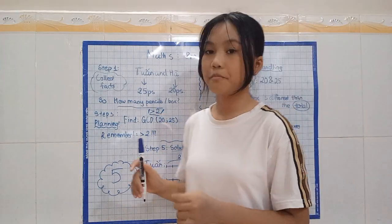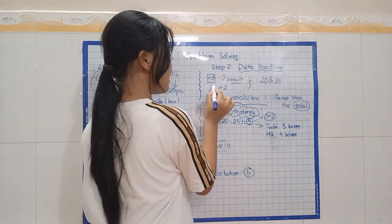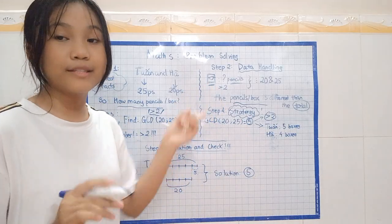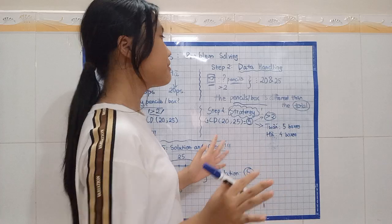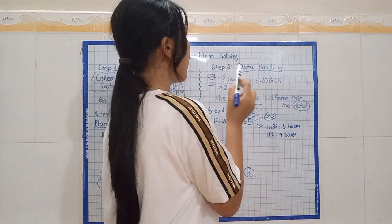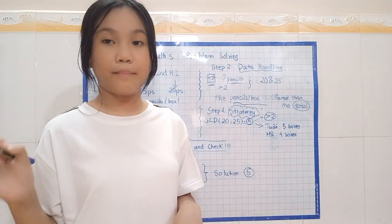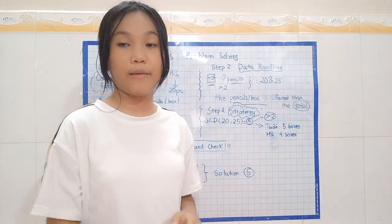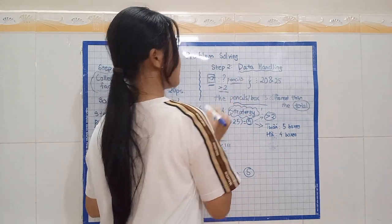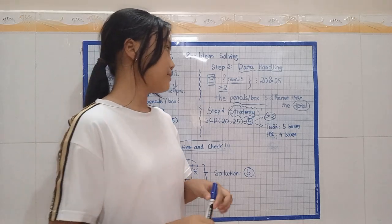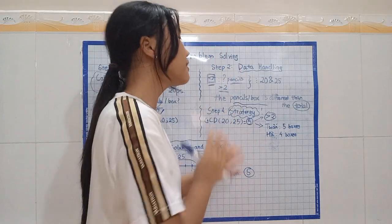We already got the hint of the problem. We've already got the facts. Now, let's come to our facts of data handling. Here, imagine, this is a pencil box. I'm drawing it like this, so it will be quicker for us to understand. Our data includes that one box has the same number of pencils, all has the same amount of number of pencils, and the number of pencils is more than two.